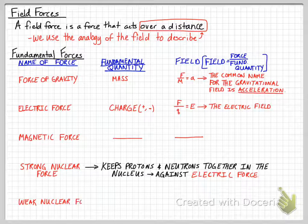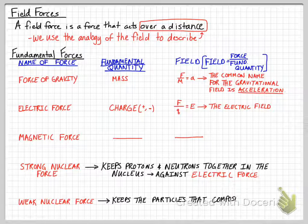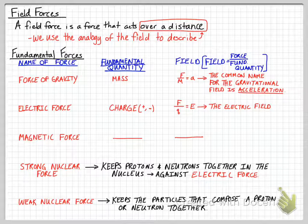The fifth is the weak nuclear force, which holds the small particles that make up a proton together so that they form one object. It keeps the particles composing a proton or neutron together. There's a little bit of force there, but it's not as strong. For this course, we're really going to study the force of gravity and the electric force the most, though magnetic forces also have some interesting applications.